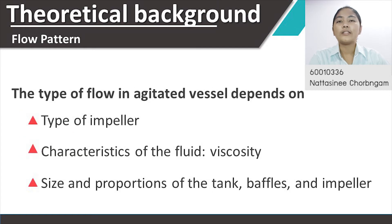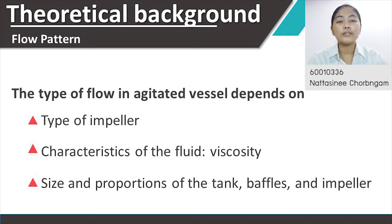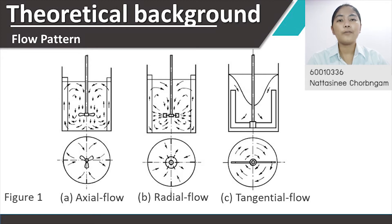The next part is flow pattern in agitated vessels. The type of flow in agitated vessels depends on the type of impeller, characteristics of the fluid such as viscosity, size and proportions of the tank, baffles, and impeller. The velocity of fluid at any point in the tank has three components, and the overall flow pattern in the tank depends on the variation in these three velocity components from point to point. Figure 1 shows axial flow, radial flow, and tangential flow patterns.